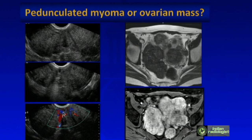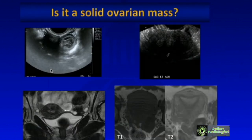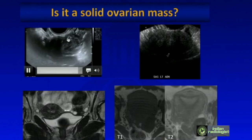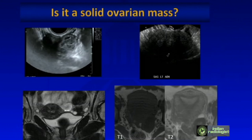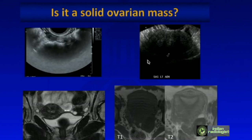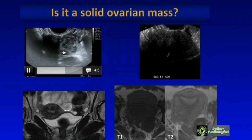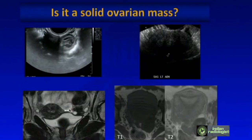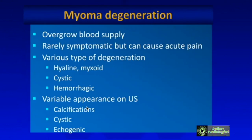On ultrasound it can be difficult to distinguish a pedunculated myoma from an ovarian lesion — the first thing to do is try to find the ovary separate from the lesion. These lesions here were actually ovarian fibromas — you can see they are part of the ovary. MRI confirms a normal uterus with a low signal intensity lesion consistent with an ovarian fibroma.